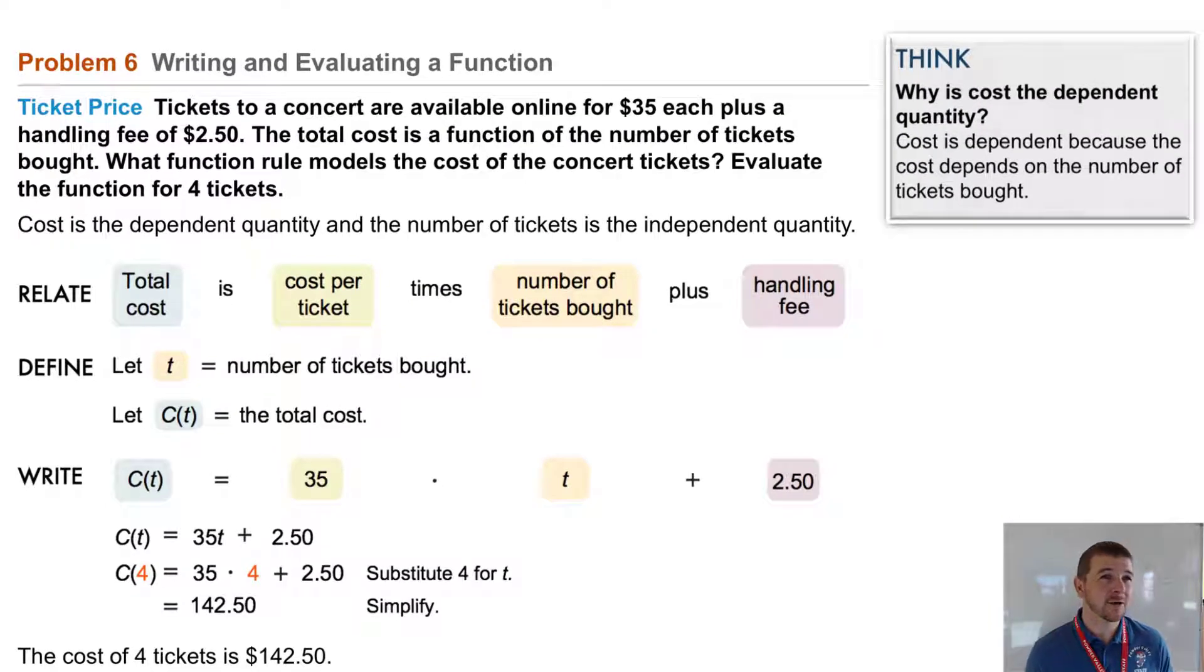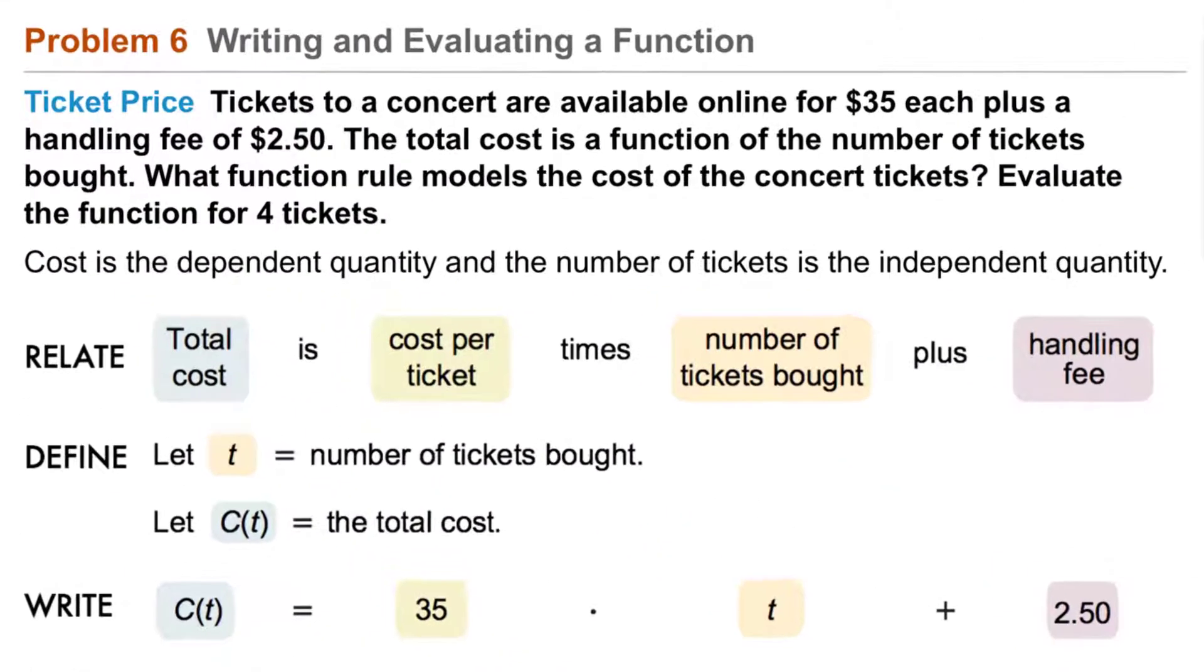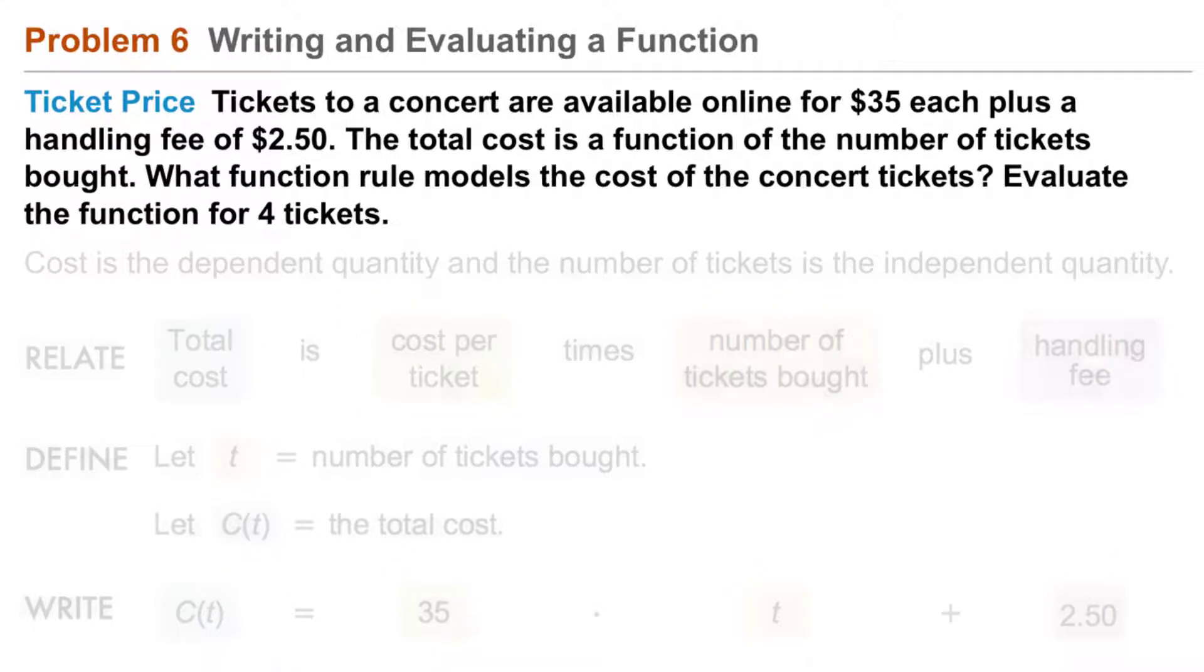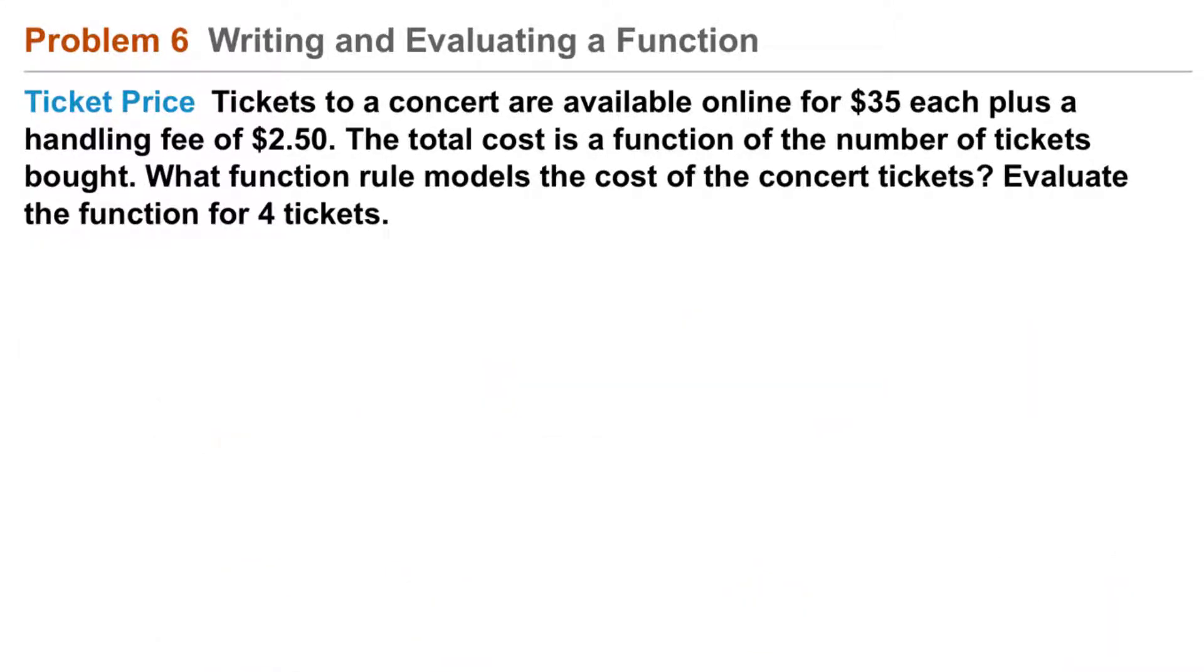That brings us to problem 6. Writing and evaluating a function. Ticket price. Tickets to a concert are available online for $35 each, plus a handling fee of $2.50.